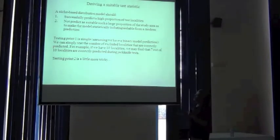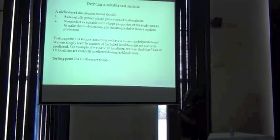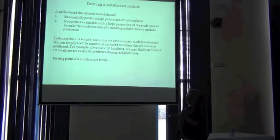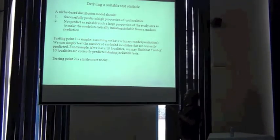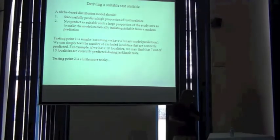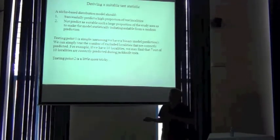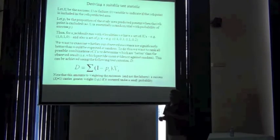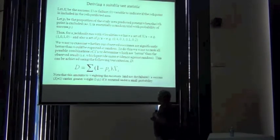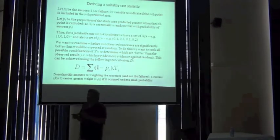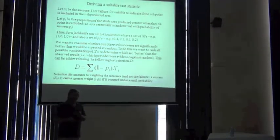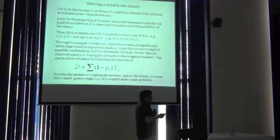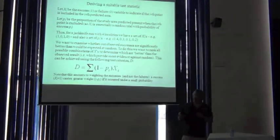So a good model would successfully predict a high proportion of test localities and not predict much of the rest of the study area. We can very easily count how many successes we have. The problem is, as always, the absence of how much of the rest of the study area to include is good or bad. I'm not going to go through the full derivation. I'd rather you read the paper. But again, what I'm after here is that the underlying probability of a success is varying. And so my colleagues were seeking a statistic that combines the information from these different trials.